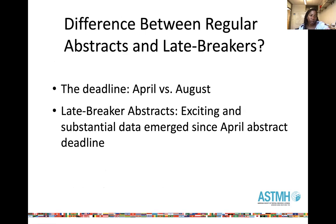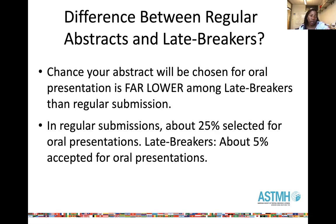We have two different abstract submission deadlines for the annual meeting. We have the regular abstract deadline in April, and then the late-breaker abstract deadline in August. The purpose of late-breaker abstracts is to identify exciting and substantial data that has emerged since the original April deadline, because science is an ongoing process. Please don't rely on this as a backup if you're not quite ready in April. The acceptance rate for an oral presentation for late-breaker abstracts is far lower — approximately 25% of regular abstracts are selected for oral presentation, but only about 5% of late-breaker abstracts are accepted for an oral presentation.